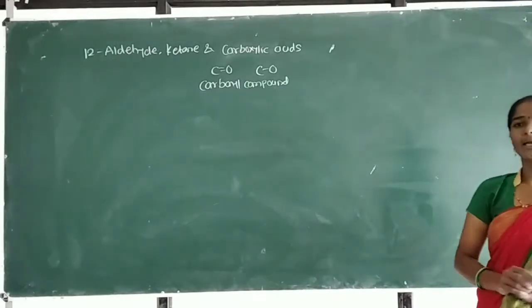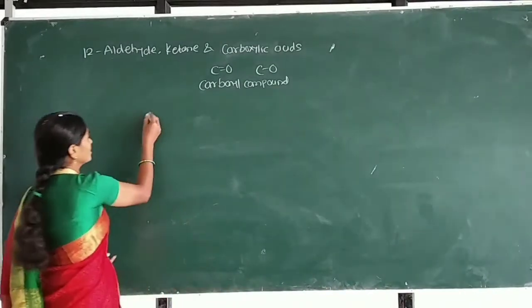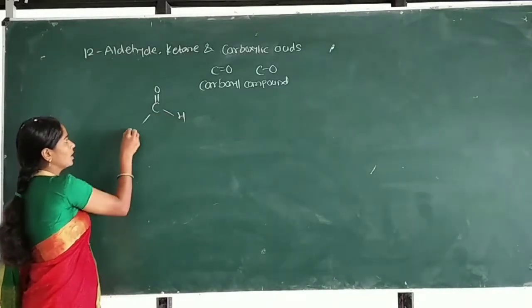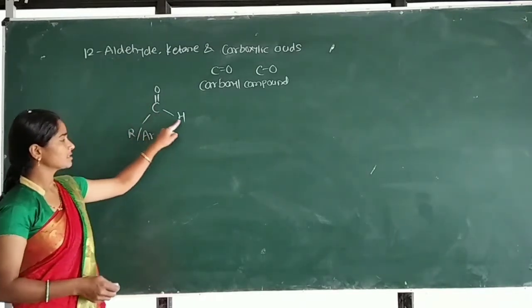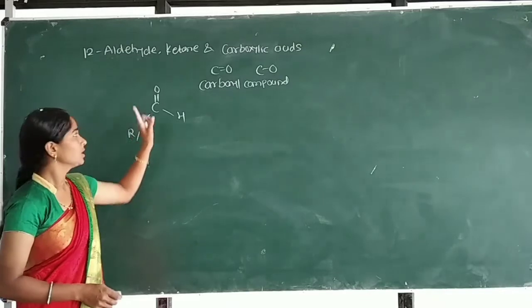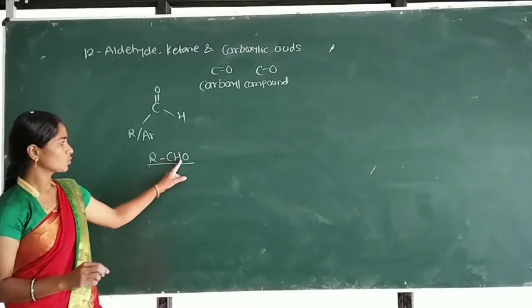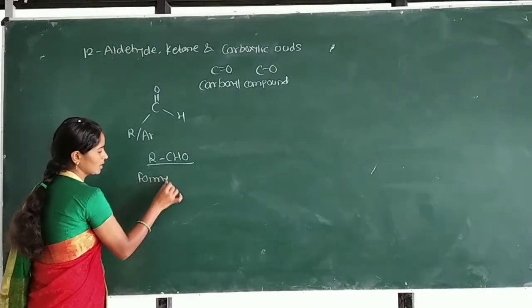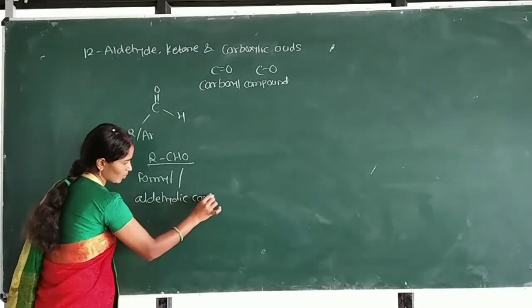The C=O group is the functional group of aldehydes and ketones. In aldehydes, this carbonyl group is attached to at least one hydrogen atom. In aldehydes, this C=O group is called the formyl group, or it is also called the aldehyde carbonyl group.